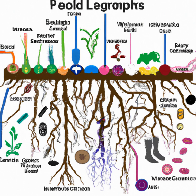Bacteria are one of the most abundant types of microbes in soil. These tiny organisms play a significant role in soil fertility by breaking down organic matter, which consists of plant and animal residues. Bacteria convert the organic matter into simple compounds like nitrogen and phosphorus, which become available to plants. This process is called mineralization, and it plays a crucial role in soil fertility.